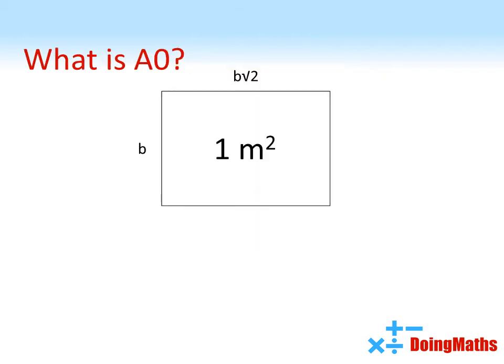We now know the ratio between the side lengths of A series paper. But this doesn't explain why A4 paper is 210 millimeters by 297 millimeters. To work this out we need to look at A0 paper. This is the sheet of paper whose sides are in the ratio 1 to root 2 but which also has an area of exactly 1 square meter.